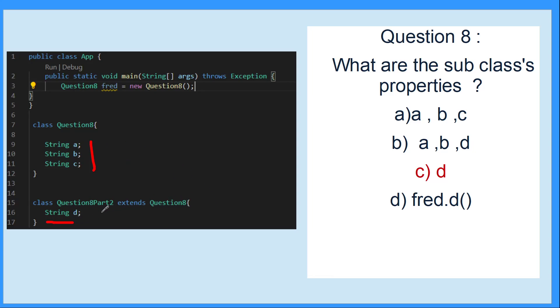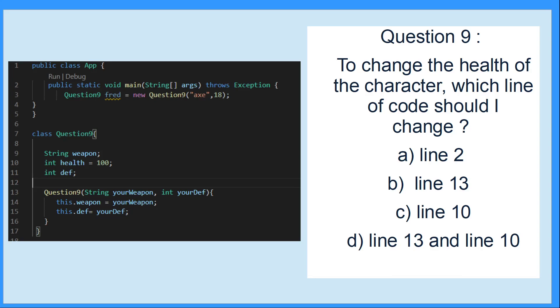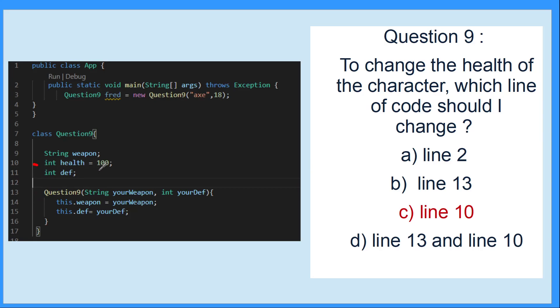This question is looking at constructor but also at static members. If we want to change the health of the character, which line of code should I change? If you look at the constructor, there's no health property there that's linking up. If you wanted to change the health, you would have to change more than one line. However, if you look at line 10, we've created this as a static member - we've defined it when we initiated all our properties at the top. So if we wanted to change the health directly, all we would need to do is change line 10.